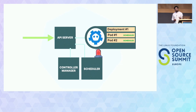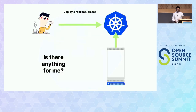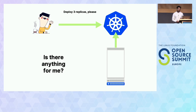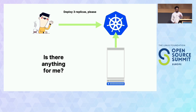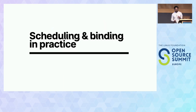Once the scheduler has decided which node the pod should run on, the request needs to be carried out to actually create the pod inside the worker node. In each worker node, we have a component called kubelet, which talks to the control plane to figure out if there's anything that needs to be created. It then delegates the creation of the container to a runtime — containerd, or Docker daemon if you're using an older version — which actually spins up the container inside the pod.